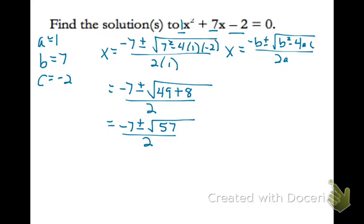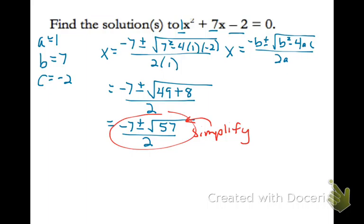Now we simplify. We look at the square root and ask: is this a perfect square, or are there any perfect square factors? There are none in 57, so there's no square root we can take. That means this — believe it or not — is our two answers: negative 7 plus the square root of 57 divided by 2, and negative 7 minus the square root of 57 divided by 2. This is called exact form because it is an exact value — we're not rounding anything.